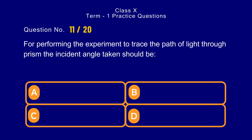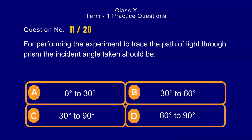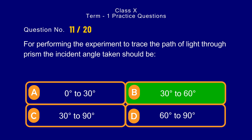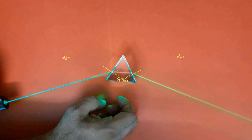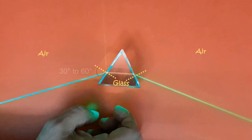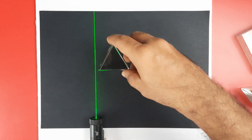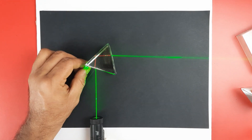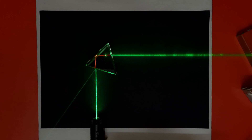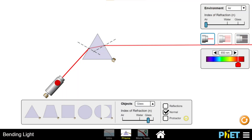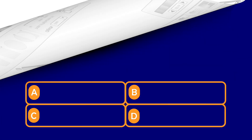Question number 11. For performing the experiment to trace the path of light through a prism, the incident angle taken should be — options: a) 0 to 30 degrees, b) 30 to 60 degrees, c) 30 to 90 degrees, d) 60 to 90 degrees. The correct answer is option b) 30 to 60 degrees. To get better results, the angle of incidence should be between 30 and 60 degrees. If less than 30 degrees, it may produce total internal reflection. If greater than 60 degrees, the incident ray is very close to the surface and it is difficult to trace the path of light.